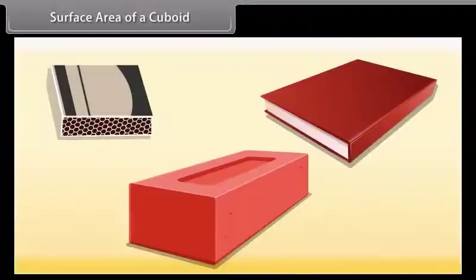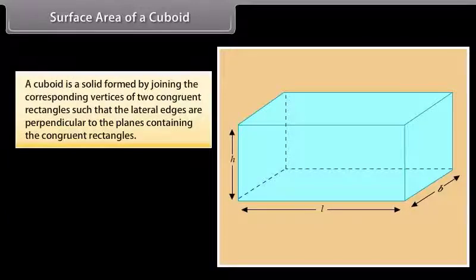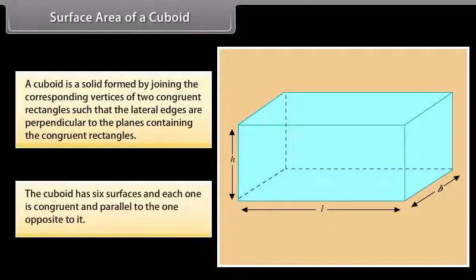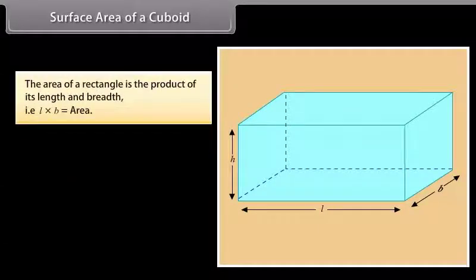Surface area of a cuboid. Students, look at these things: a book, a matchbox, a brick — all these are examples of a cuboid. A cuboid is a solid formed by joining the corresponding vertices of two congruent rectangles such that the lateral edges are perpendicular to the planes containing the congruent rectangles. We can see that the cuboid has six surfaces and each one is congruent and parallel to the one opposite to it.